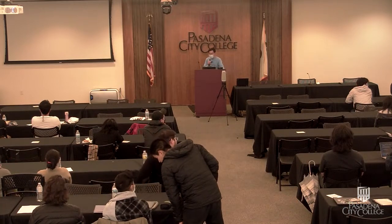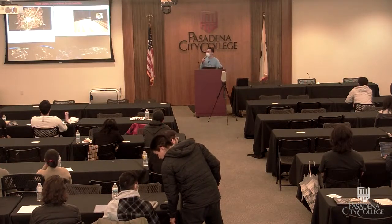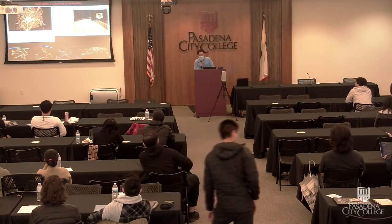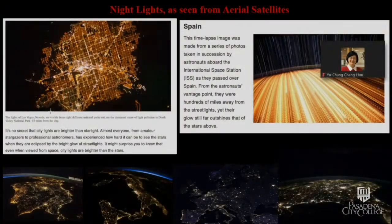Now I can concentrate. Thank you so much for bearing with me. What we're seeing here are pictures of different parts of the world. Now we see different parts of the world, and as you can see from satellites, part of the ISS is seen over here on the leftmost side. So you can see what the night sky looks like from above.